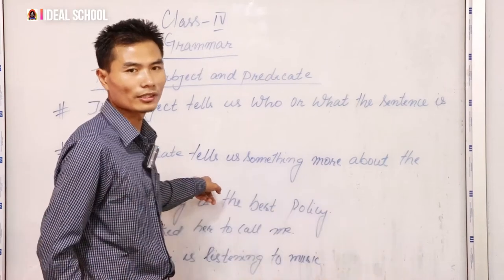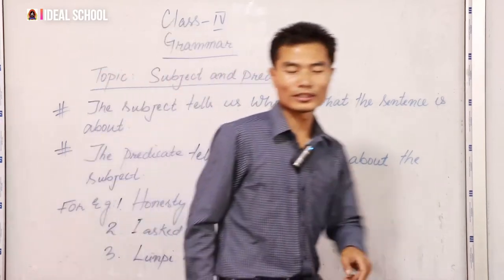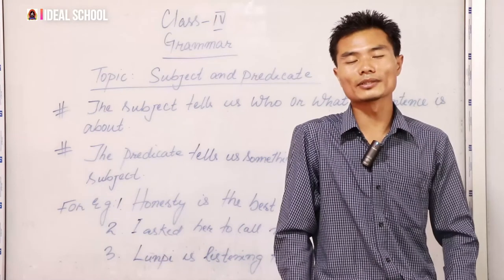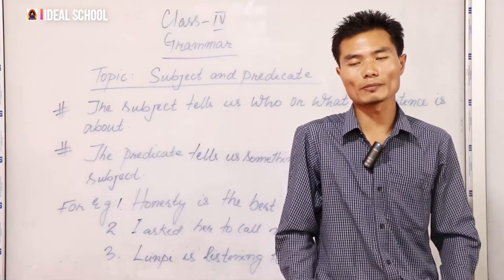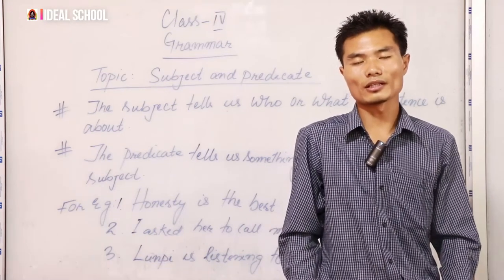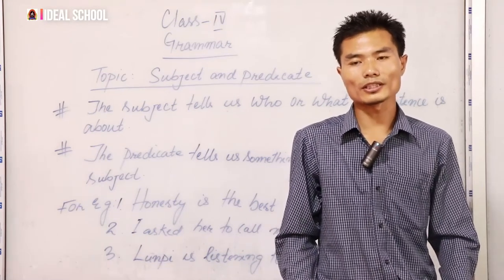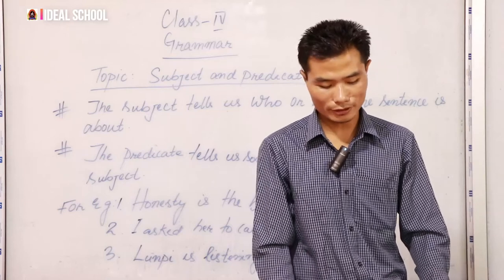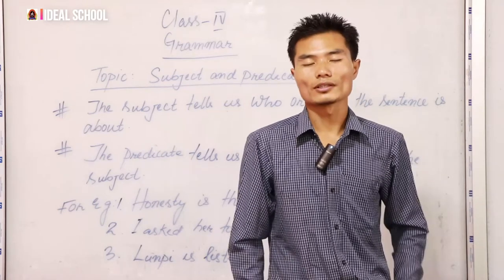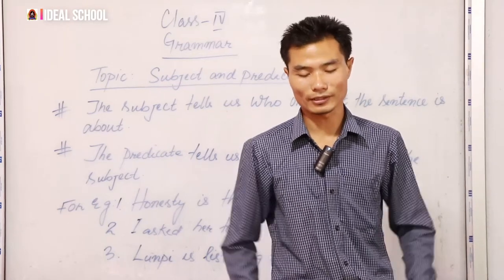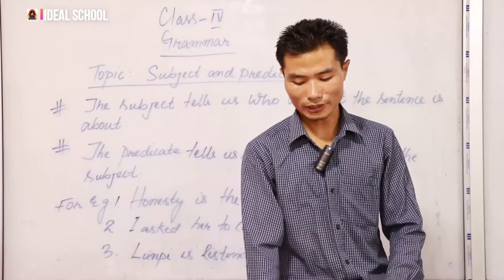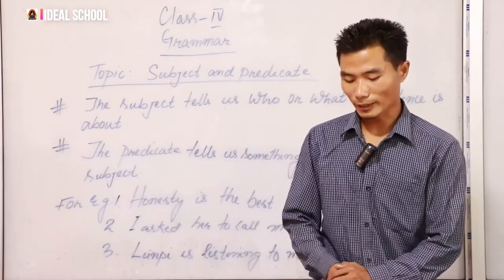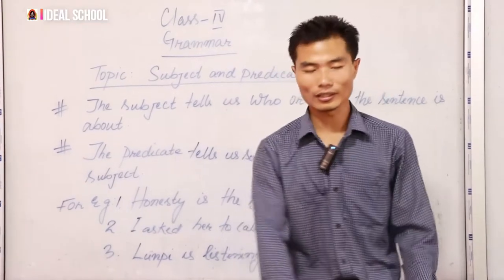The second is a predicate. A predicate means it tells something more about the subject only. It is not difficult at all. Predicate means it tells about the subject — what the subject does. Now let us see some examples of the subject and predicate. It will not take long.